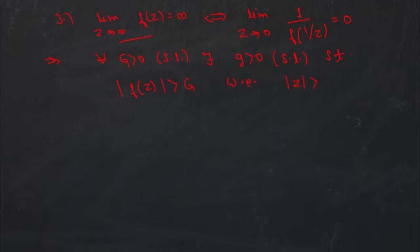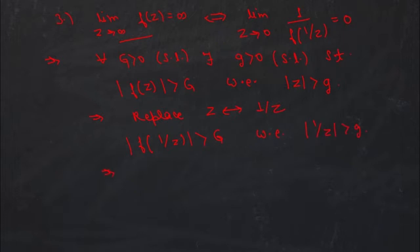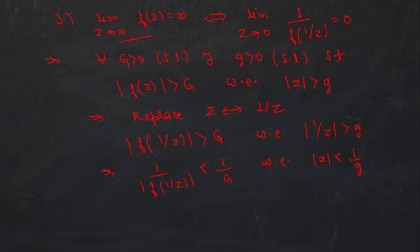Replacing z by 1/z, we get |f(1/z)| > G whenever |z| < 1/g, which means |1/f(1/z)| < 1/G whenever |z| < 1/g. Since g and G are both sufficiently large, their reciprocals are sufficiently small. Therefore this implies, by definition, that the limit as z goes to 0 of 1/f(1/z) equals 0. You can reverse the direction to get the same steps, so these are equivalent conditions.